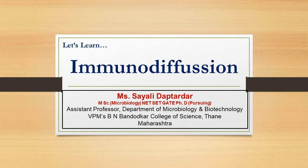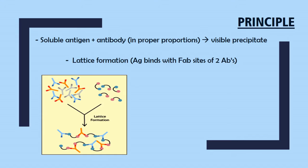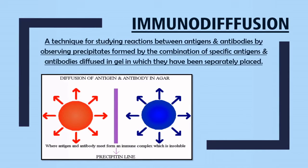Hello everyone, let us continue with the discussion of our immunology lecture. In today's lecture, we are going to specifically talk about immunodiffusion. I hope you remember that when antigen and antibody bind with each other in the proper concentrations, they result in a visible precipitate when the antigen is soluble. That precipitate is because of the lattice formation as shown in the diagram. With this background information, we will learn the new concept called immunodiffusion.